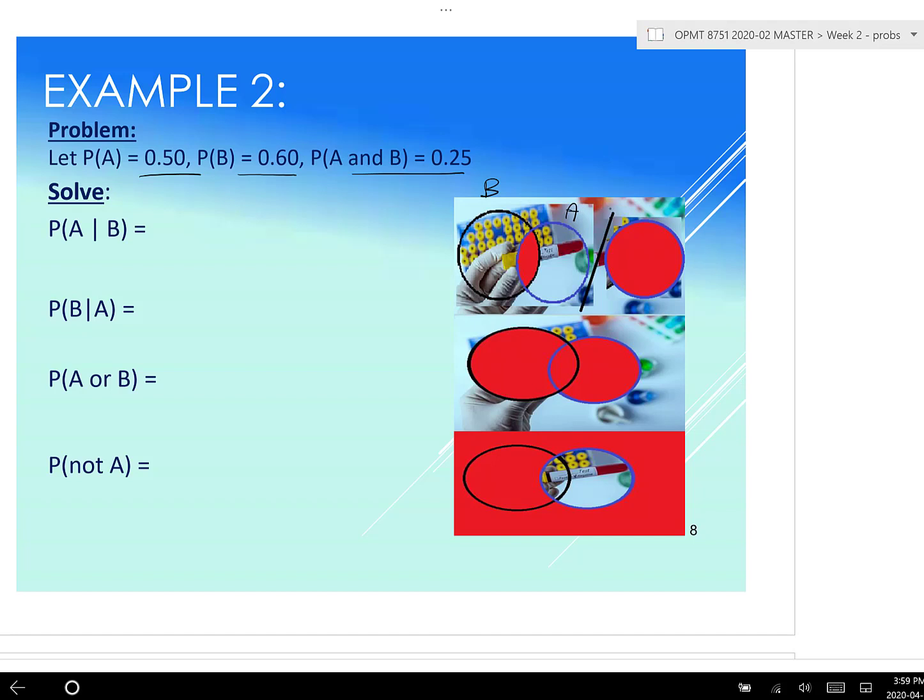If we want A given B, remember our formula is the probability of A and B, divided by the probability of B. Note, kind of think of this conditional line as a division line. So whatever is here, that's what I divide by. Okay. So given that B has already occurred, what are the odds of A occurring? And actually, so sorry, just to be consistent with our picture, let's switch this around.